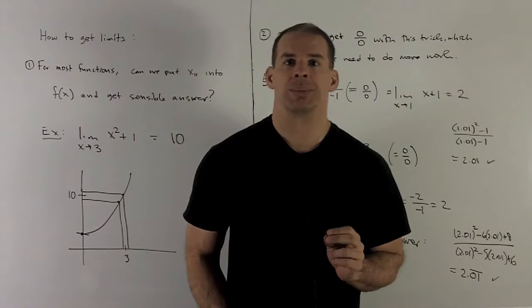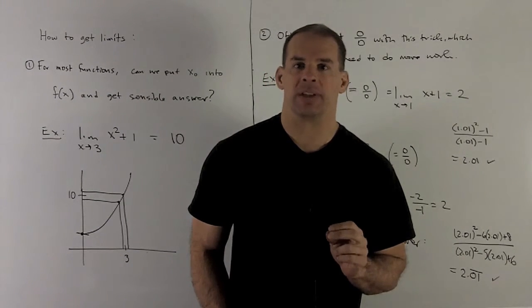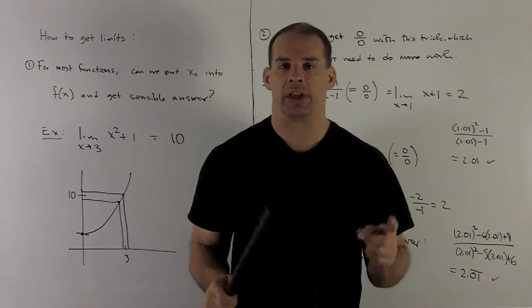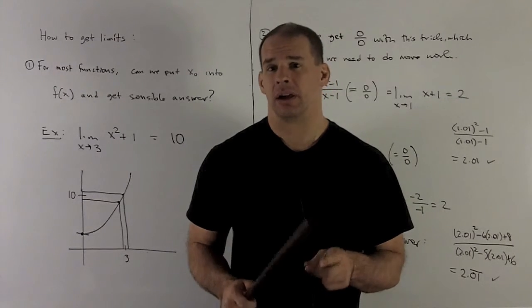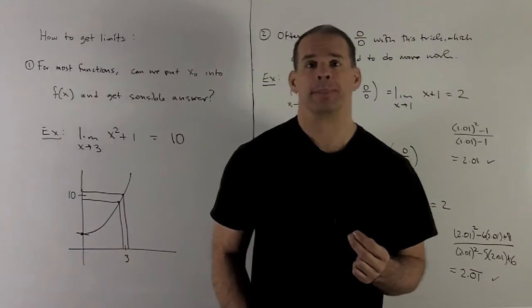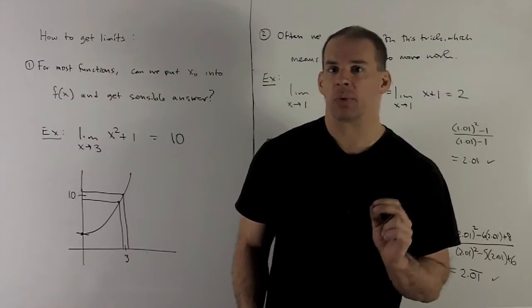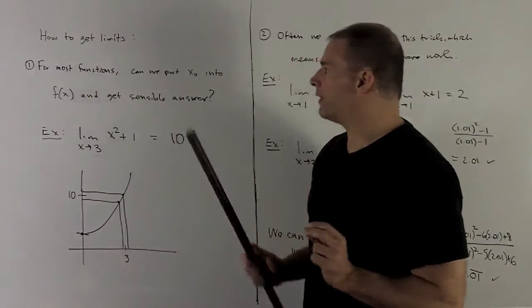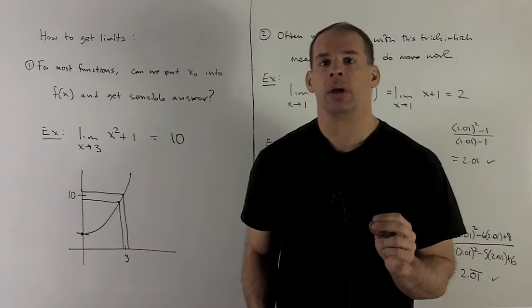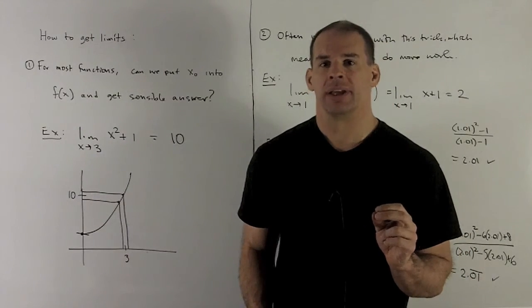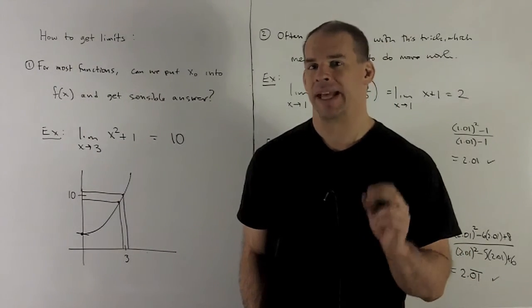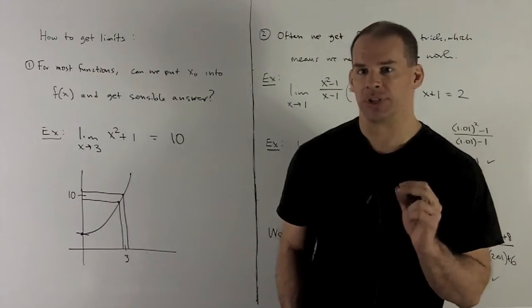So the question is, is there going to be a better way to get limits without actually having to sit down and compute a whole bunch of points on your function near the point you want to take the limit at? Well, here's the general rule. For most functions, you can take your x₀, put it into your function. If something sensible comes out, that's going to be your limit.